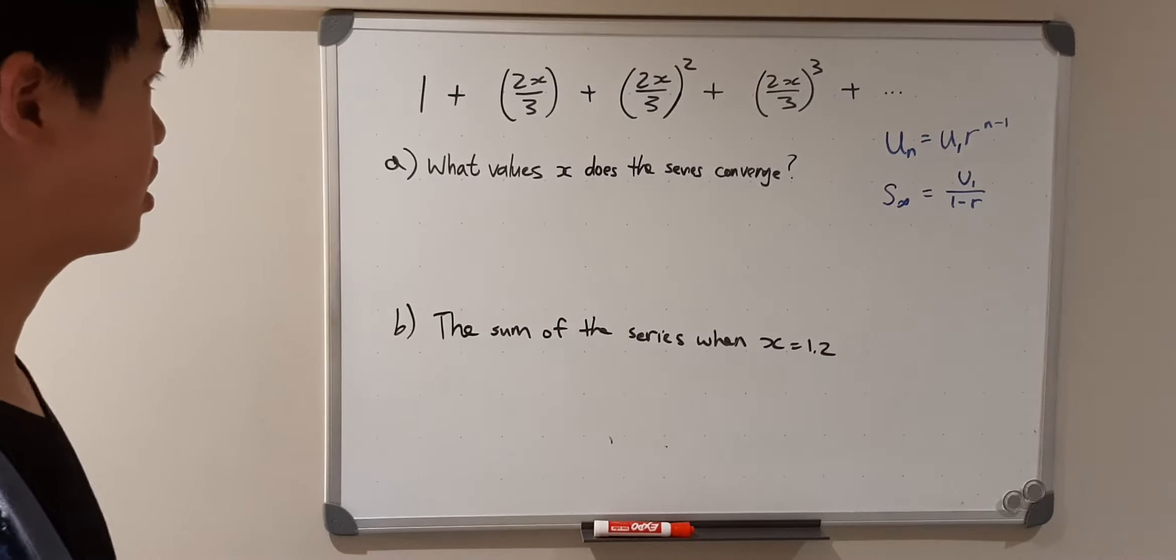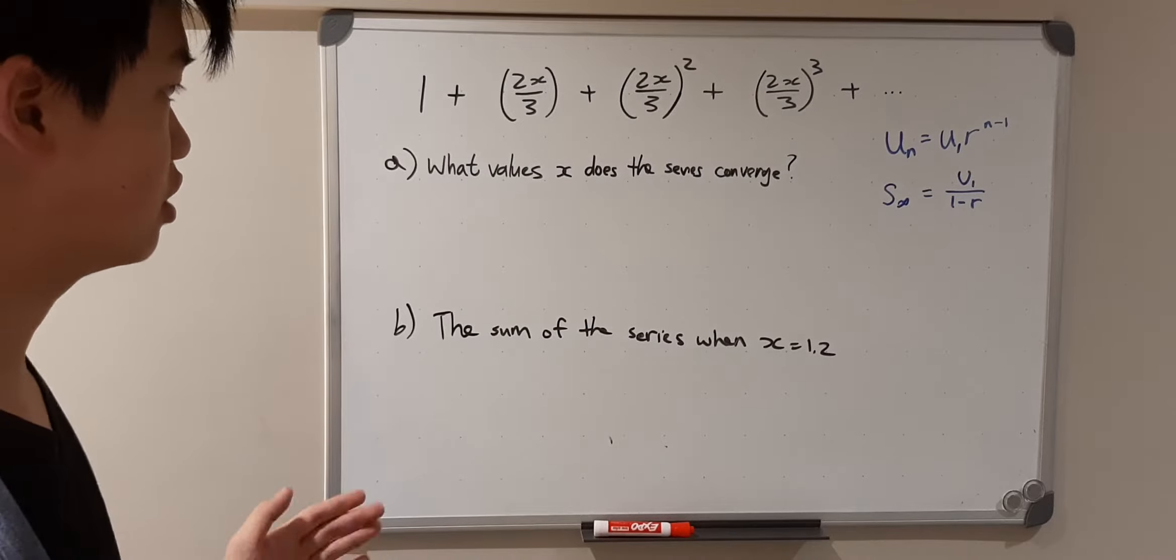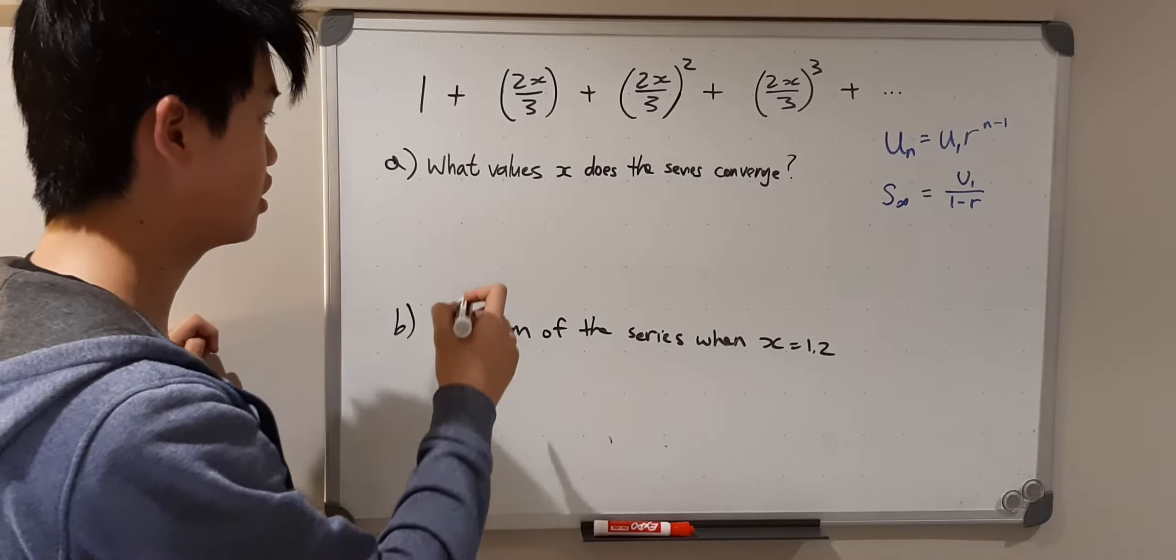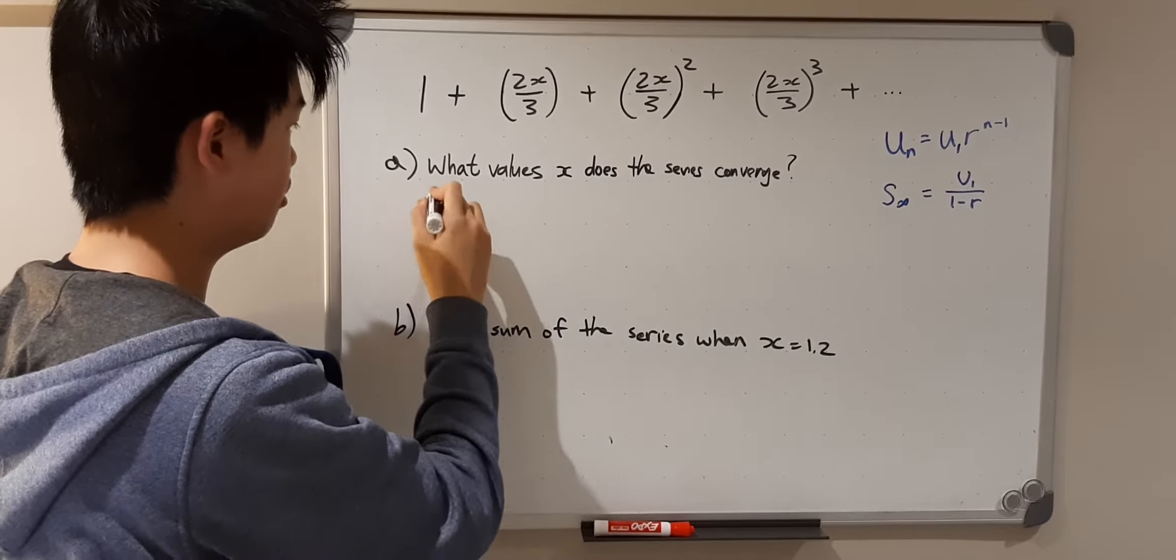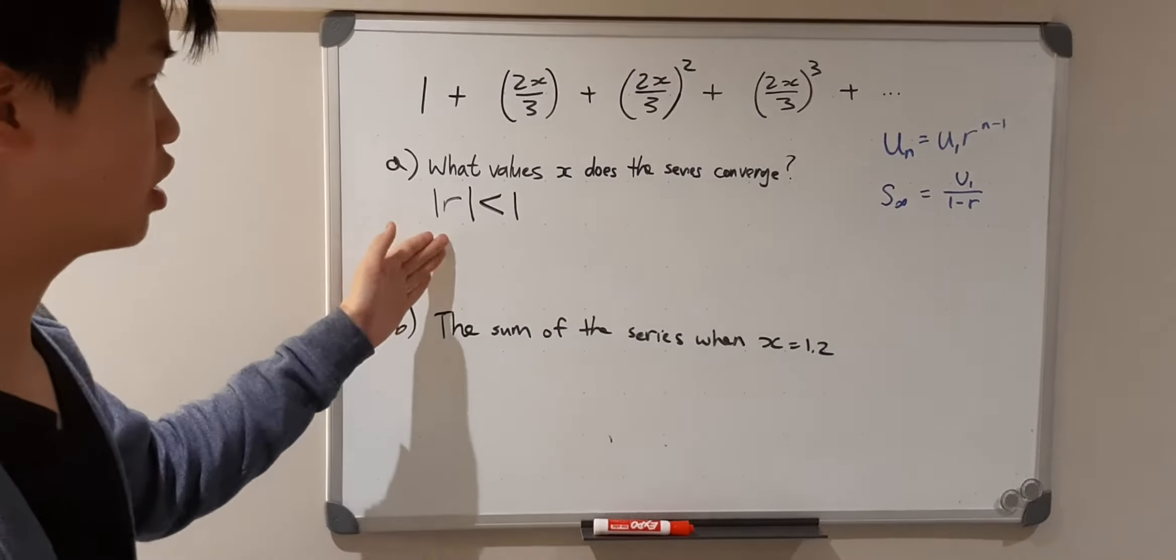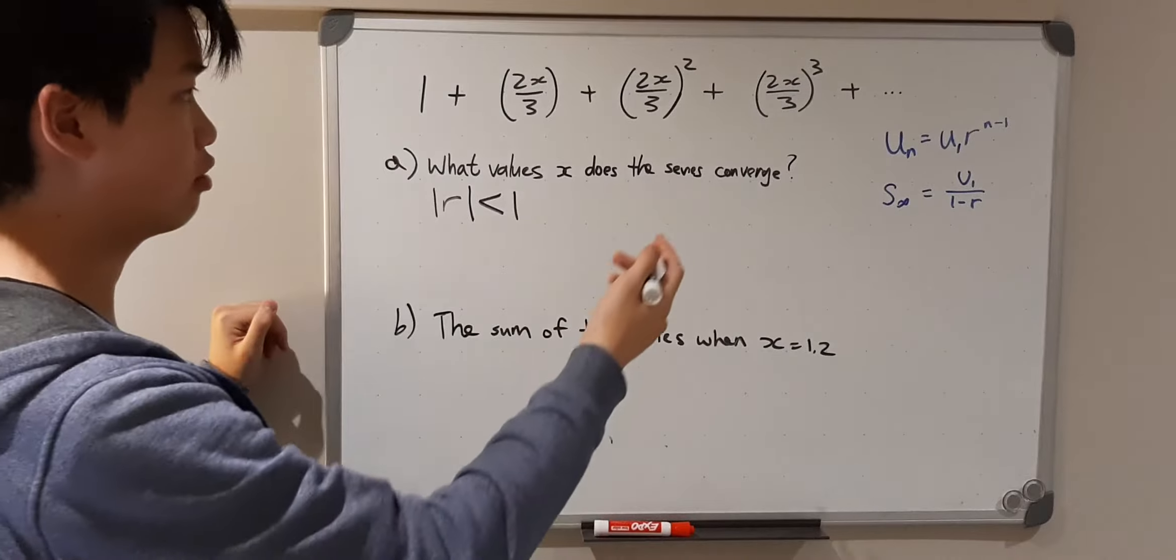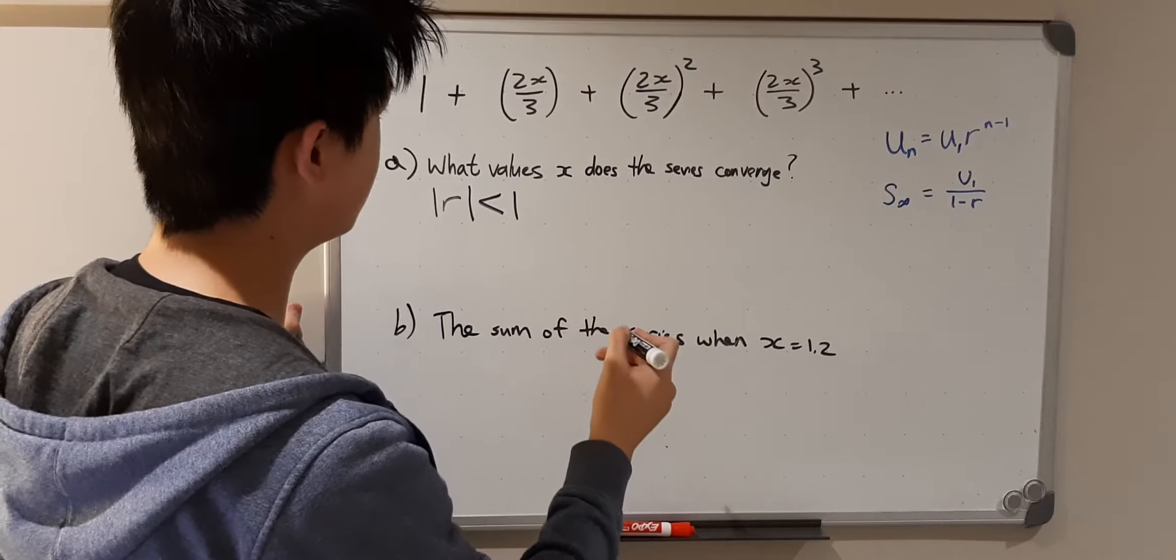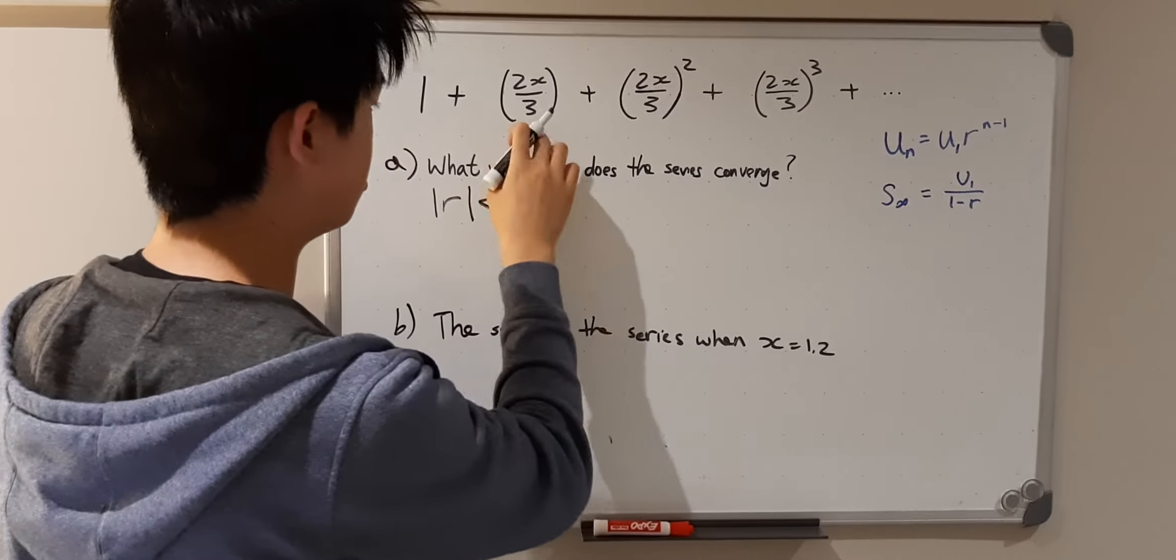So what values of x does the series converge? We know that the series converges when the absolute value of r is less than 1. So what is r? Well, let's use the first equation over there that's provided in the data booklet. Let's take these two terms, for example.